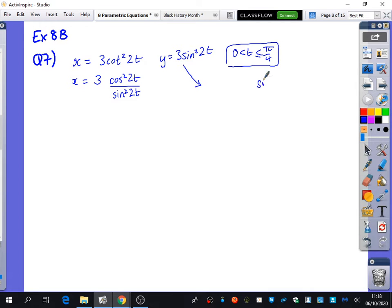Yeah, so we know that sine squared of theta is 1 minus cos squared theta. So similarly, sine squared 2t would be 1 minus cos squared 2t.